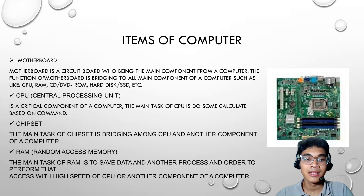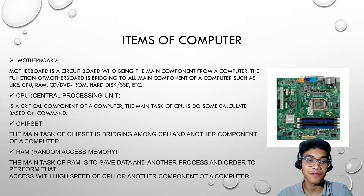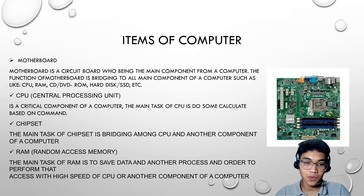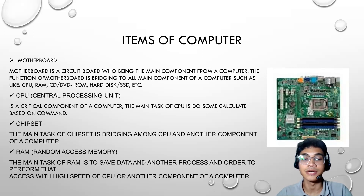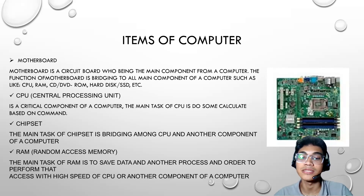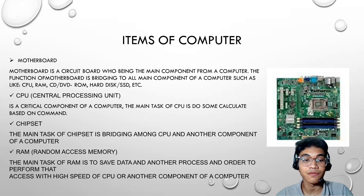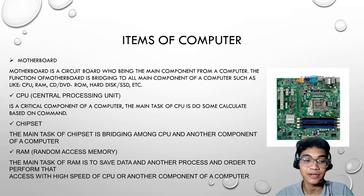Let's get into the items of a computer. The first one, we have the motherboard. Motherboard is a circuit board that is the main component of a computer. The function of a motherboard is to bridge all main components of a computer, such as a CPU, RAM, CD or DVD-ROM, hard disk or SSD, and so on.